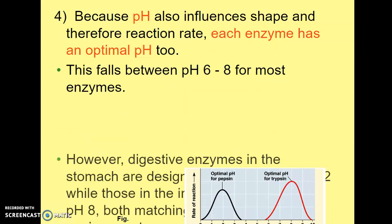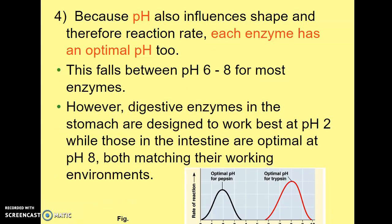Another factor that can affect the reaction rate of an enzyme is also the pH. pH can also influence the shape of the enzyme, and therefore if you influence the shape of the enzyme, you influence the reaction rate. So each enzyme also has an optimal pH. Usually this falls between a pH of 6 and 8 for enzymes, because an enzyme is a biological catalyst.